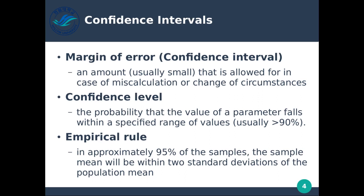Our confidence level is the probability that the value of a parameter falls within a specified range of values. This should sound familiar because it's essentially what we were doing with normal distribution — what is the probability that a value falls within a certain range of the mean? Our confidence level is basically how confident we are that the value will be within a certain range. Normally for real studies, our confidence level is greater than 90%, usually something like 90%, 95%, or 99%.